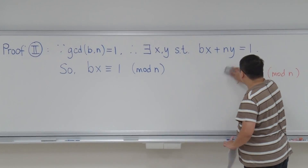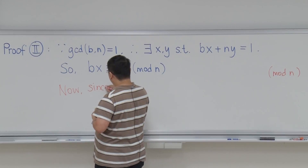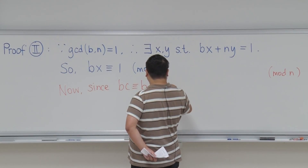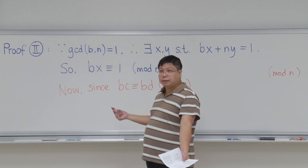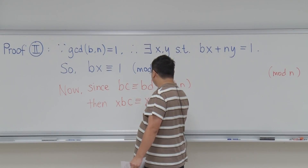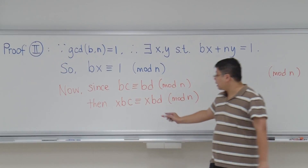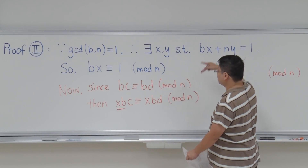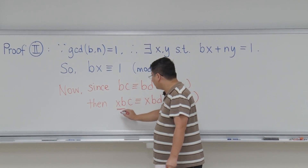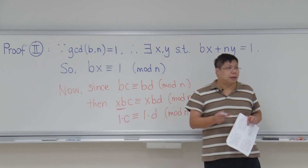We have B·x is congruent to 1 modulo n. Now, since B·x equals B·d modulo n, let's multiply x on both sides. We will have x·B·C equal to x·B·D modulo n. And xB is Bx, so this equals 1. So 1 times C is the same as 1 times D mod n, and we get the result.